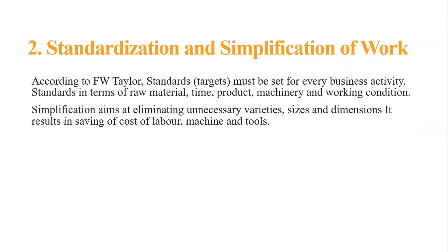For example, a juice shop that gives you 150 varieties of juice cannot concentrate on quality because they have 150 varieties of fruits, 60 varieties of ice creams, and so on. They cannot concentrate on quality, so the company does not sell well. So the juice shop reduces from 150 varieties to 30 varieties. With 30 varieties ready, the quality will increase and the sales will increase. That is what standardization and simplification of work means.